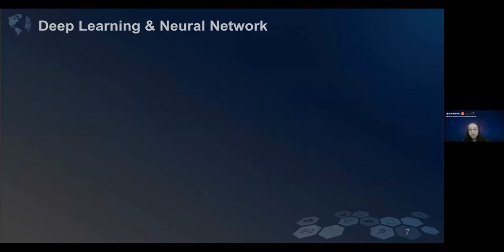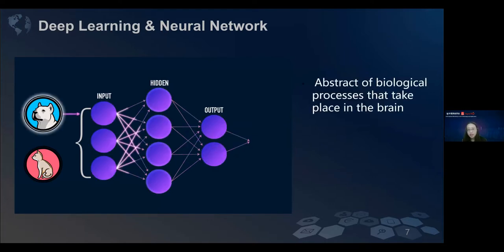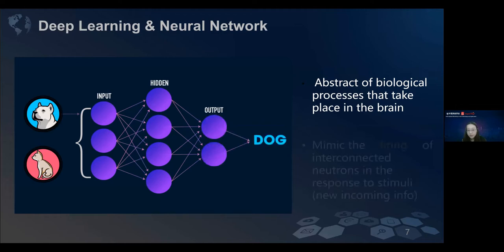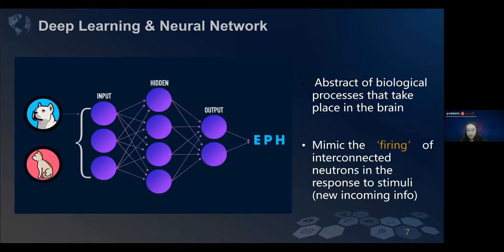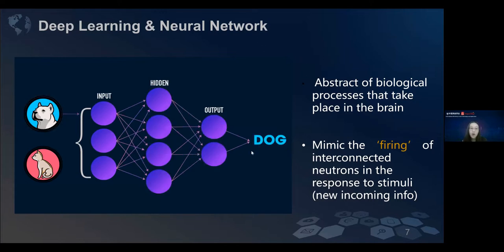After machine learning, let's see some concepts about deep learning. This graph shows a neural network, a really simple neural network as an abstraction of biological processes that take place in the brain. It mimics the firing of interconnected neurons in response to stimuli. You can see the input transfers from one layer to the next and gives us the prediction. The network ingests a vast amount of input data, processing it through multiple layers of neurons that learn increasingly complex features of the data at each layer.